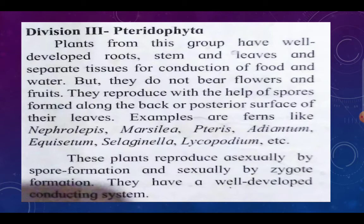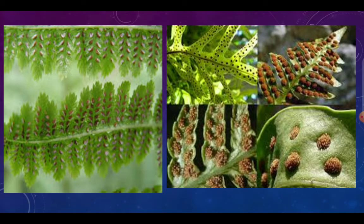Examples of pteridophytes include Nephrolepis, Marsilea, Adiantum, Equisetum, Selaginella, and Lycopodium. These plants can reproduce asexually by spore formation or sexually by zygote formation, with different male and female gametes on the same or different plants. They have a well-developed conducting system to carry food and water to every part of the plant body. Spores are formed on the back side of the leaf.